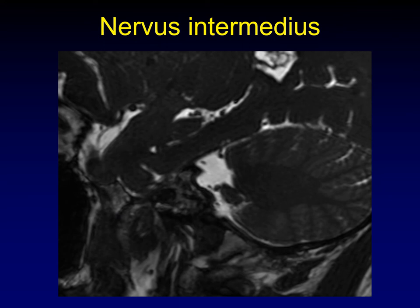There is an important nerve communicating between the seventh and eighth cranial nerves called the nervus intermedius. Various pain syndromes are associated with it, and it's very difficult to assess radiologically. On imaging, it appears as a small wisp running between the seventh and eighth cranial nerves near the porus acousticus. If called upon to assess that nerve clinically, that small wisp is what you're looking for — it's a tough one to find.